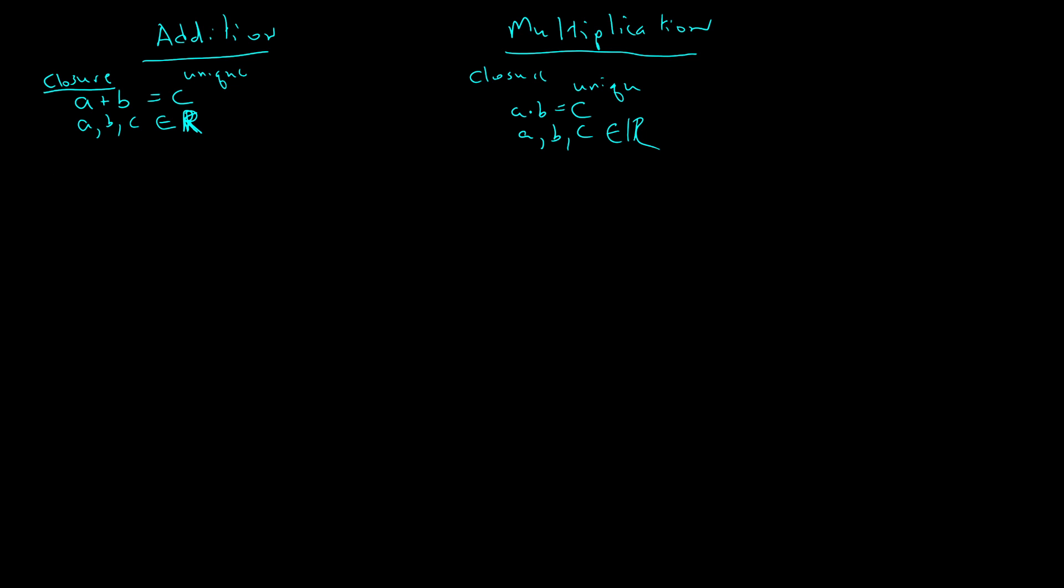Well, that gives us an identity. And we have a very specific identity operator or number, which is zero for addition. Because A plus zero is A again. If I add zero to any number, I get my number back.